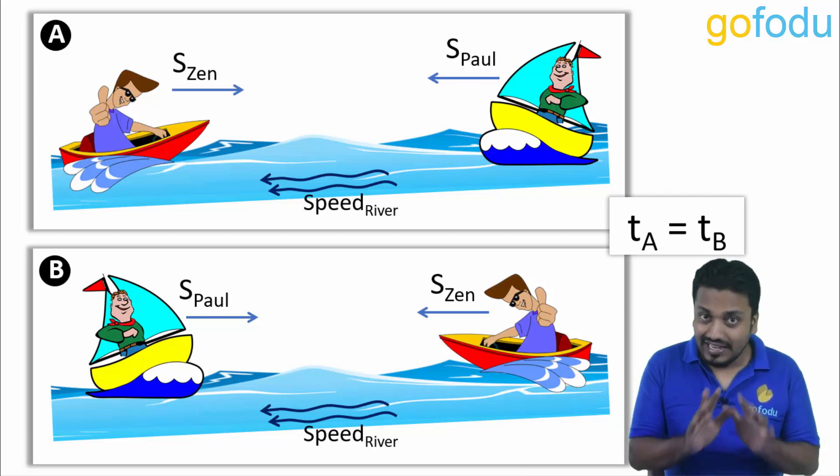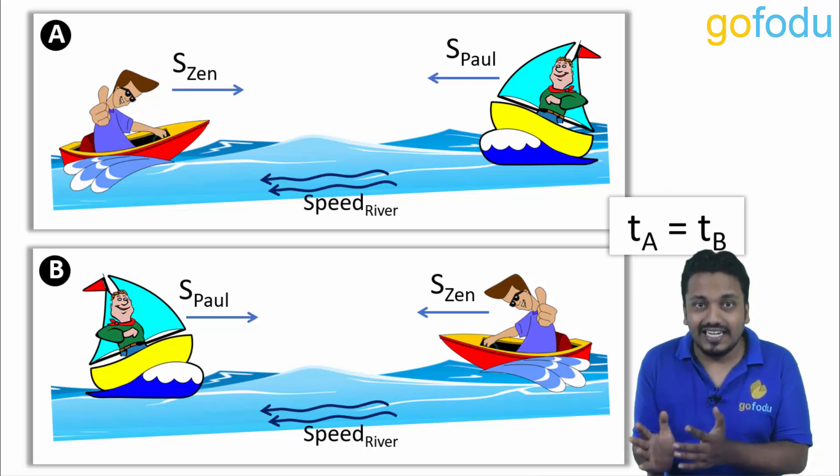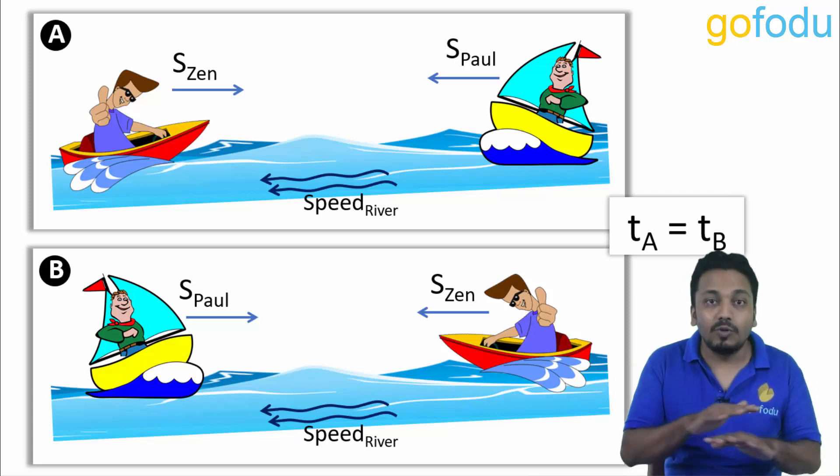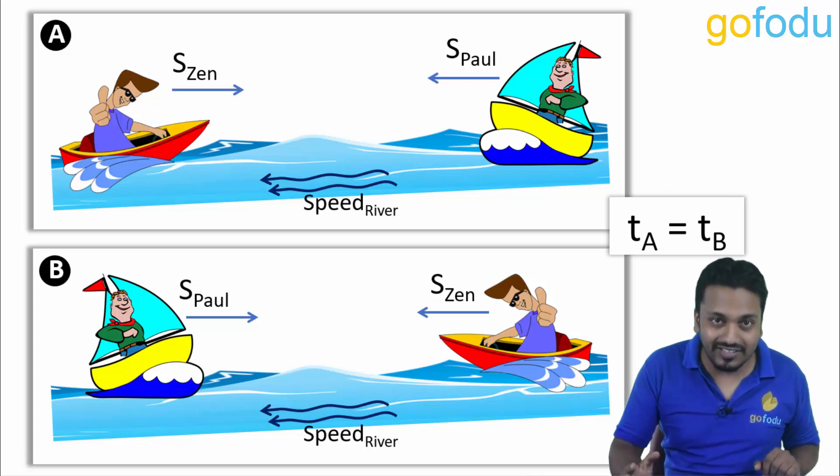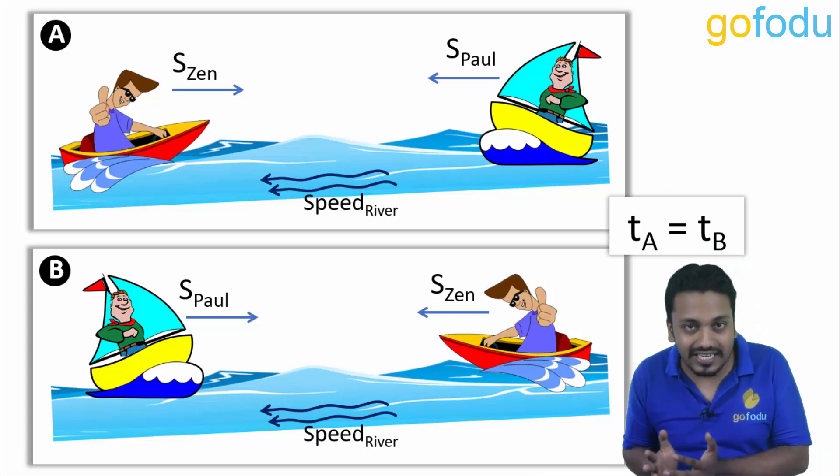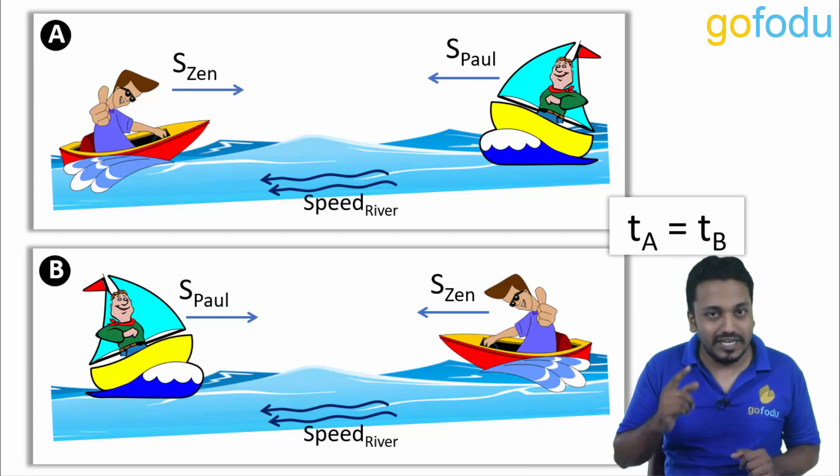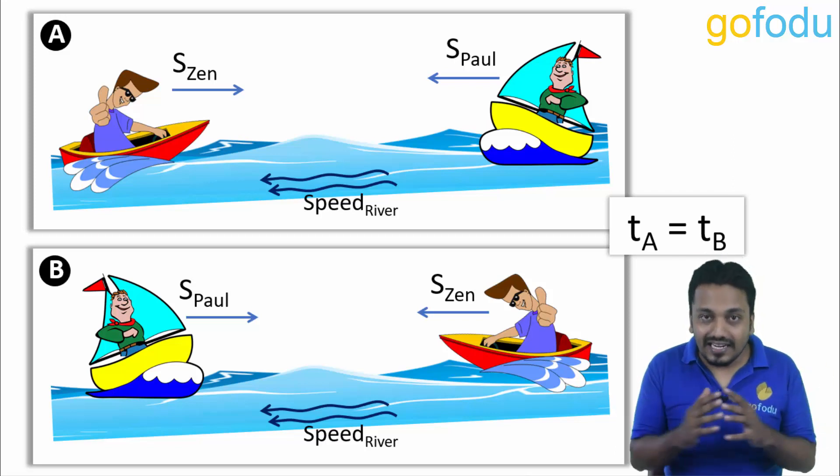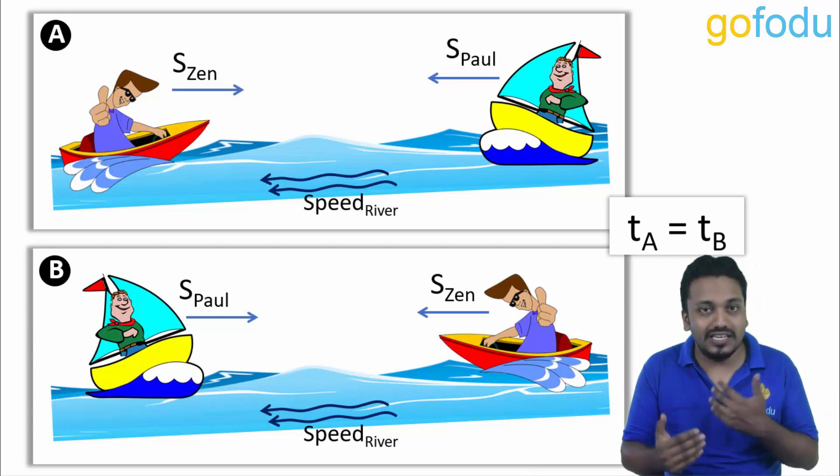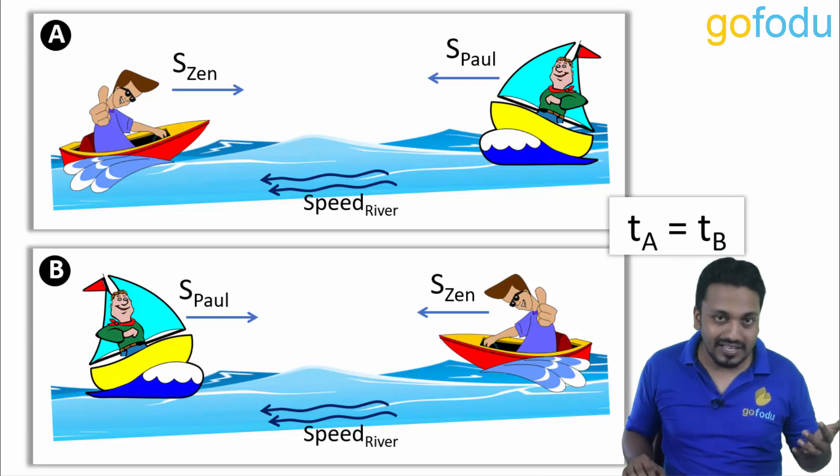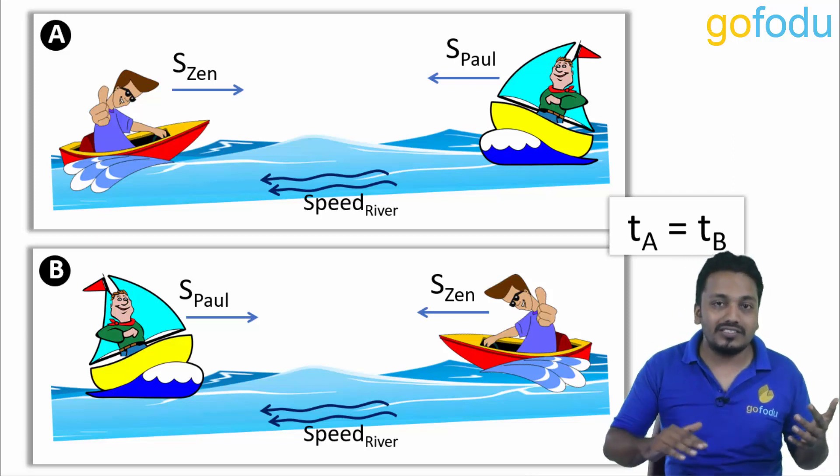Logic is simple. In both these cases their relative speed of moving towards each other would be same, because while calculating relative speed the speed of the stream would get cancelled. For case one calculate speed upstream for Zen and speed downstream for Paul, add these speeds to get relative speed. Do the same for case two and you will get same relative speed in both cases. As distances are also same, the time taken both ways will be same.